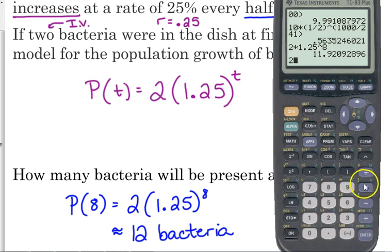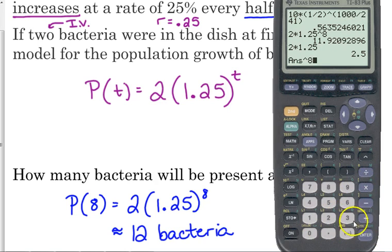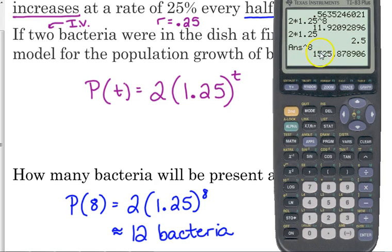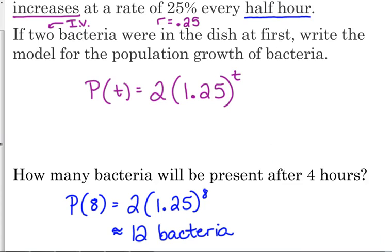Okay, now notice I did not do two times 1.25 and then raise it to the eighth. Okay, that is not the right answer. There's not 1,500 bacteria. Exponents come before multiplication. If you do 1.25 to the eighth and then multiply it by two, that's fine.